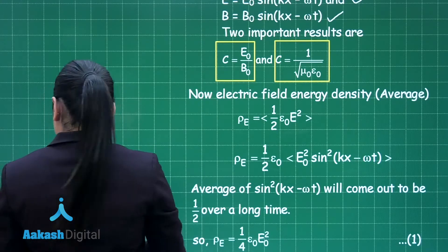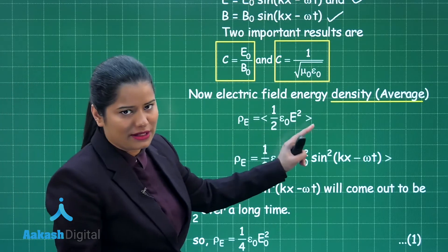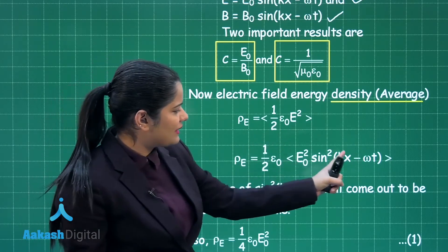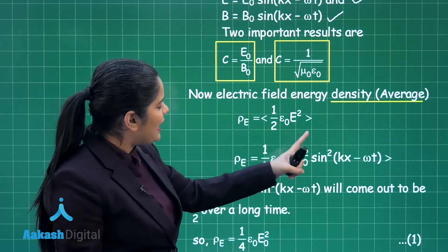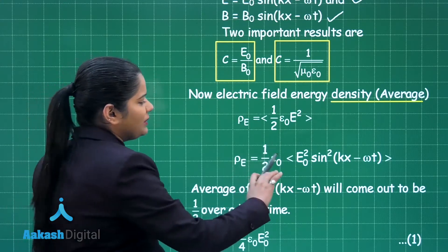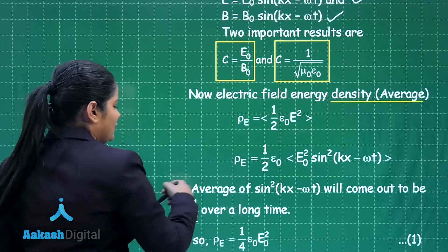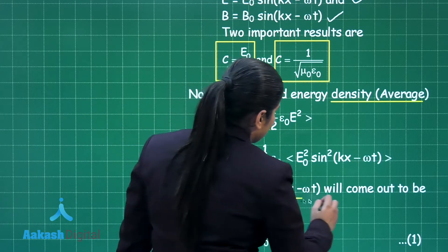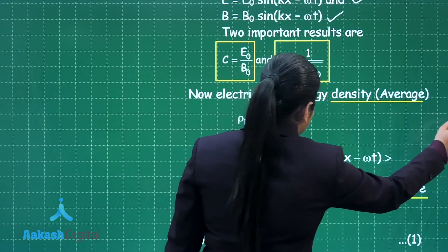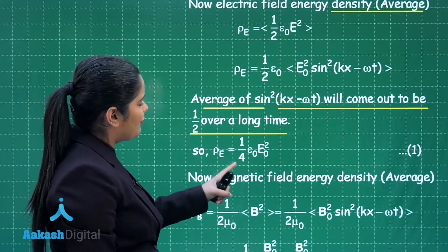The average electric field energy density is given by half epsilon-naught E-squared. When you substitute the value of E, and take the average of sine squared of (kx minus omega t) over a long time, that average comes out to be one-half. So the average energy density of the electric field works out to be (1/4) epsilon-naught E-naught squared — mark this as equation 1.